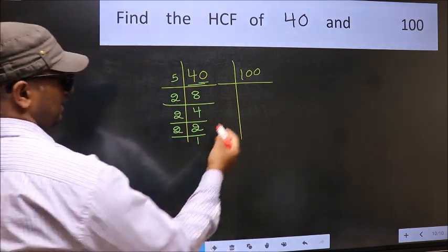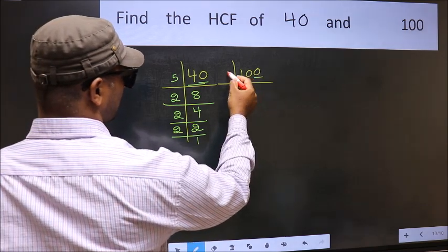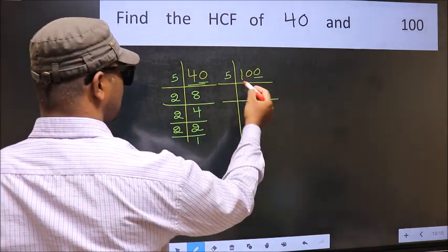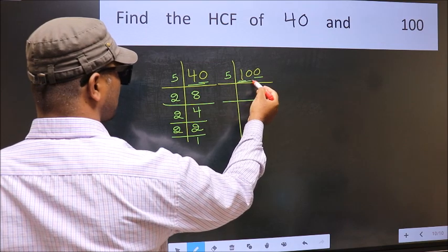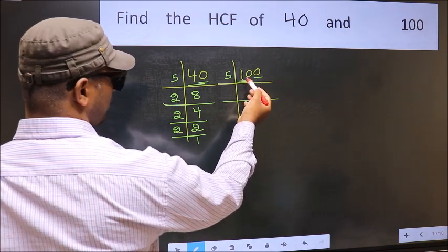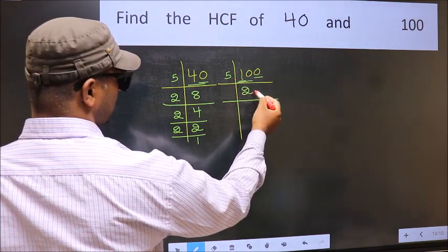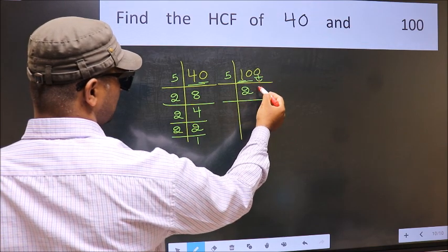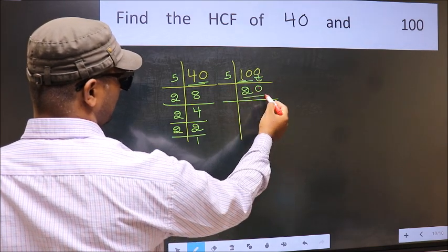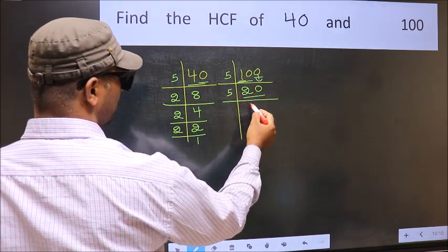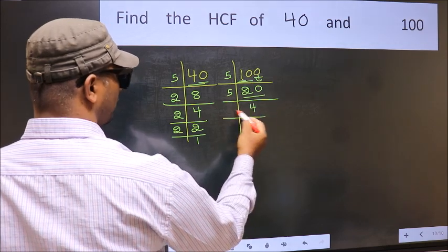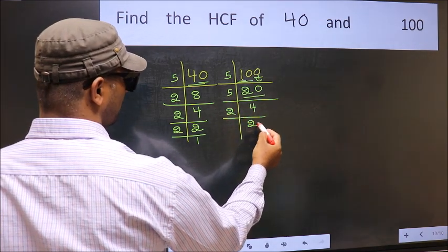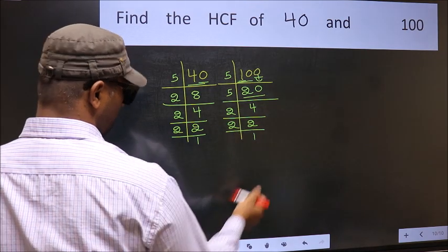Now the other number. Last digit is 0, so take 5. When do we get 10 in the 5 table? 5 times 2 is 10. Now 20: 5 times 4 is 20. 4: 2 times 2 is 4. 2 is a prime number, so 2 times 1 is 2.